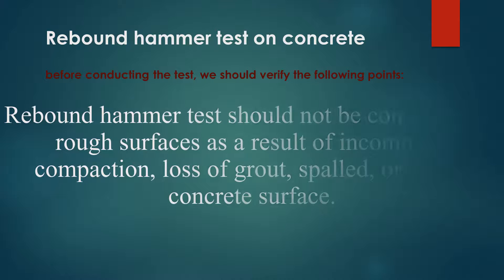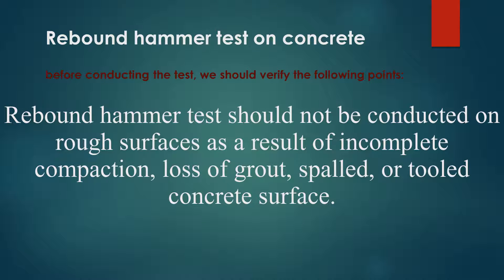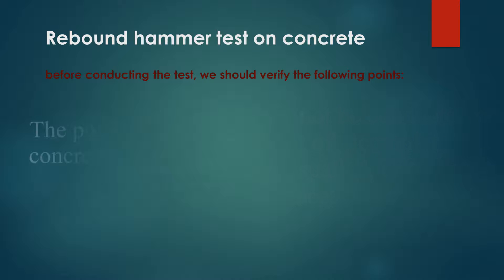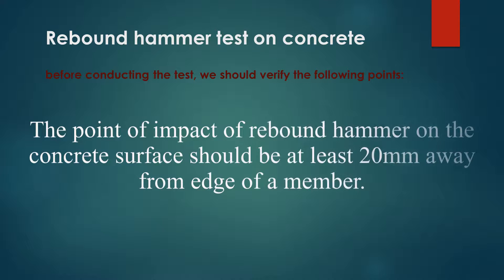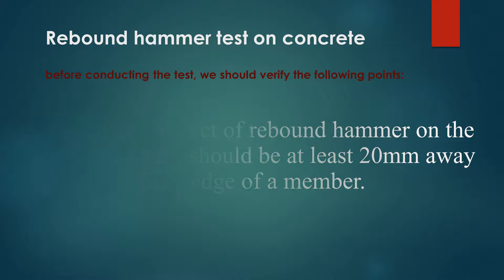Rebound hammer test should not be conducted on rough surfaces as a result of incomplete compaction, loss of grout, spalled, or tooled concrete surface. The point of impact of rebound hammer on the concrete surface should be at least 20 millimeters away from edge of a member.